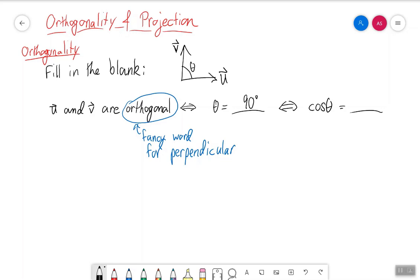Or if you like radians, if and only if the angle is pi over 2. But this is the same thing as saying that the cosine of the angle between them is zero, because the cosine of 90 degrees is zero. We use this, therefore, as our definition because we know how to relate the cosine of the angle between two vectors with the dot product of those two vectors.